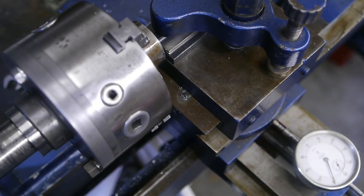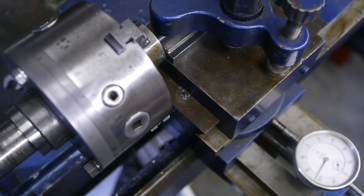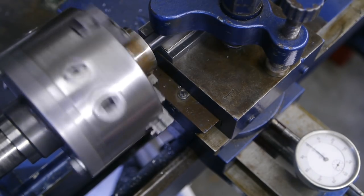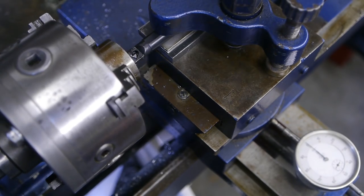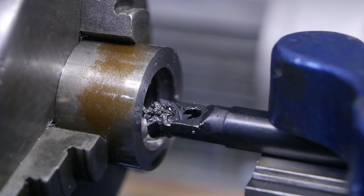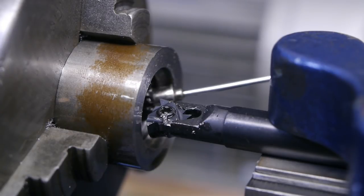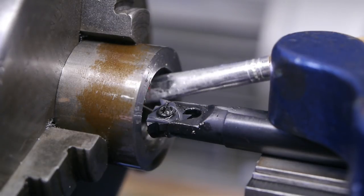I'm using this dial indicator to keep track of how deep I'm cutting and also for backing out the tool and returning it to the correct position. Currently I'm about 1.6 millimeters deep, and I need to go to about 2.5 millimeters. I'm constantly removing the chips with my little magnet—it helps reduce the risk of breaking the tip—and I'm also using plenty of cutting oil.